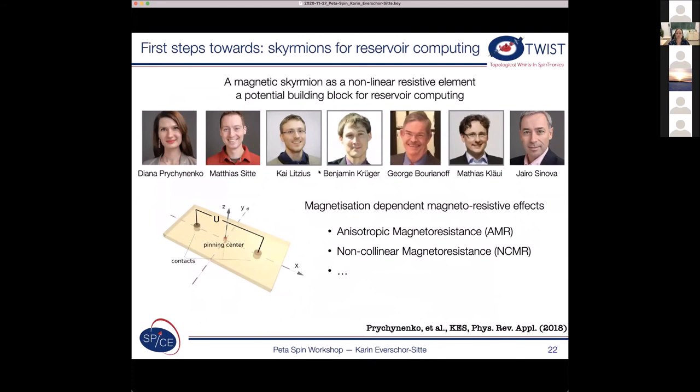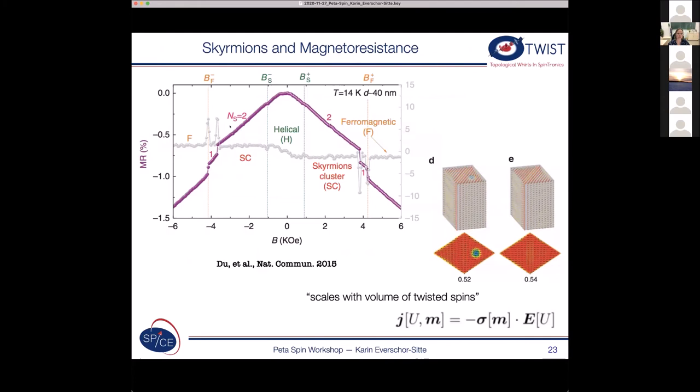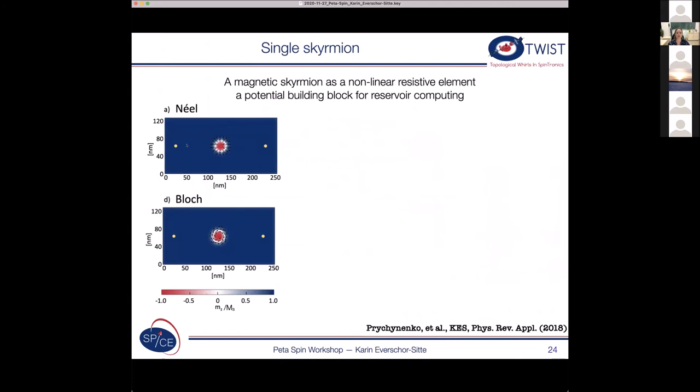So we started to look at it from a very simple point first. So we just had two contacts and we wanted to put one skyrmion in the middle. And what we need for this concept to work is a magnetization-dependent magnetoresistive effect. And what we use in our simulation is the anisotropic magnetoresistance. But in principle, you can use any of them because the details of the reservoir don't matter. Just one comment in terms of measurability. So it has been shown that skyrmions can be observed. So whenever you have a skyrmion, then you can see it actually in the magnetoresistance signal.